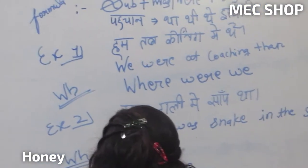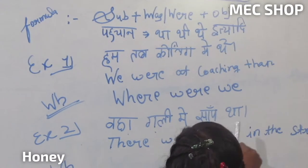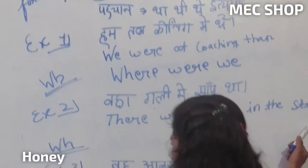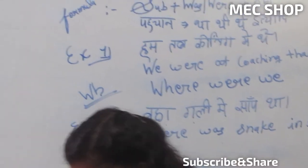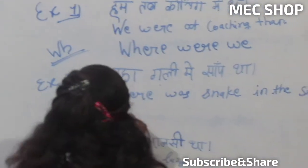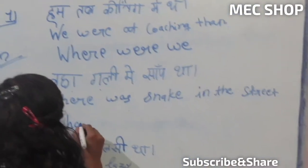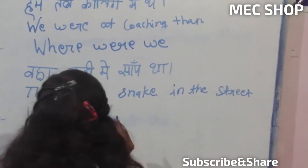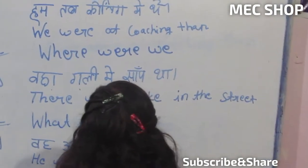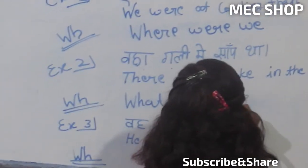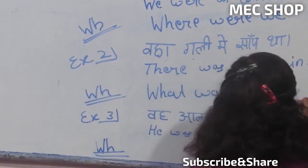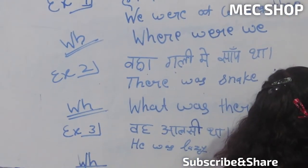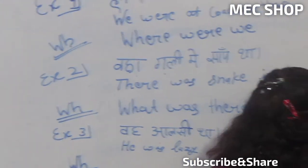Example second: Waha gali mein saab tha. There was a snake in the street. W.H. question: What was there in the street?